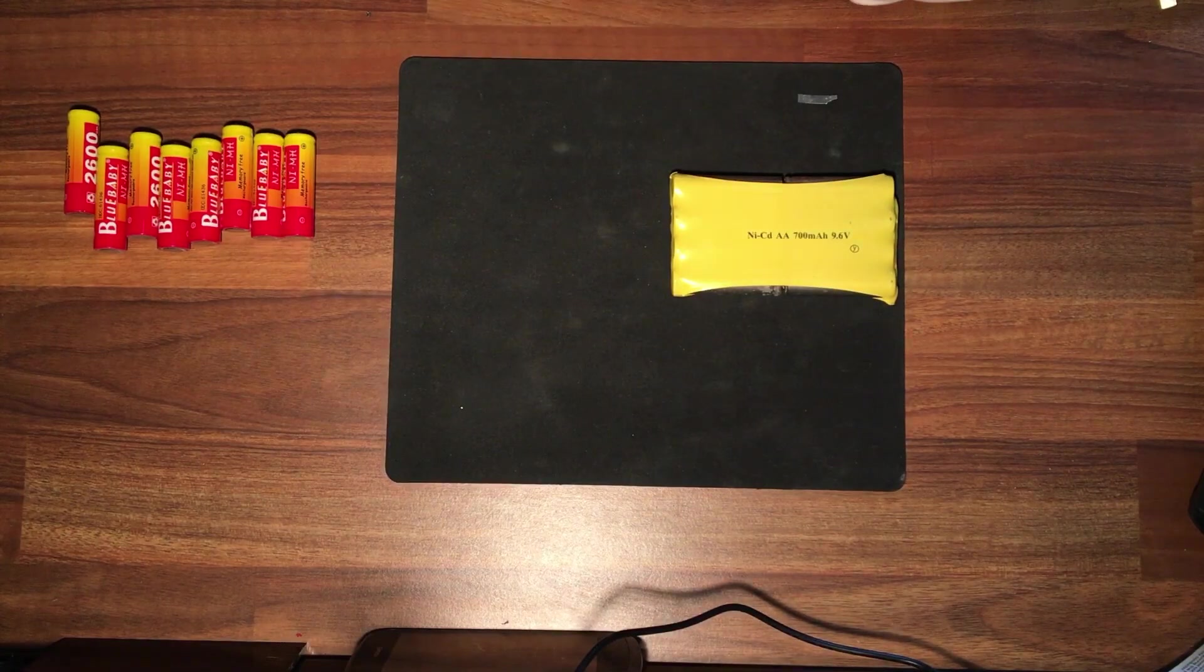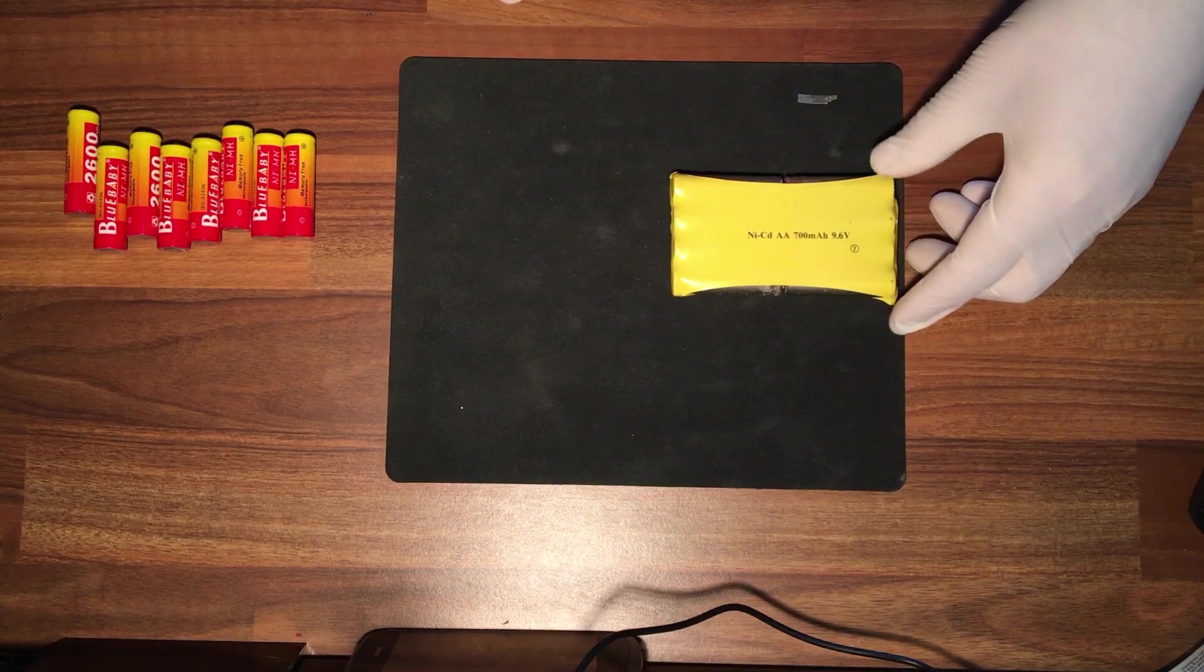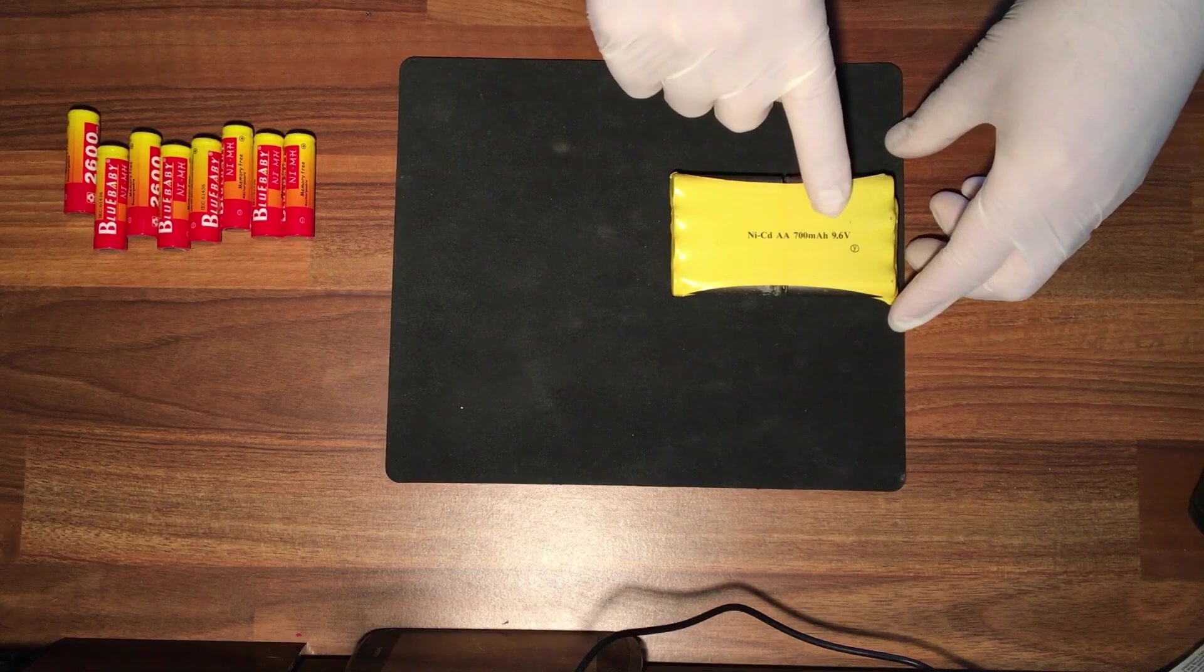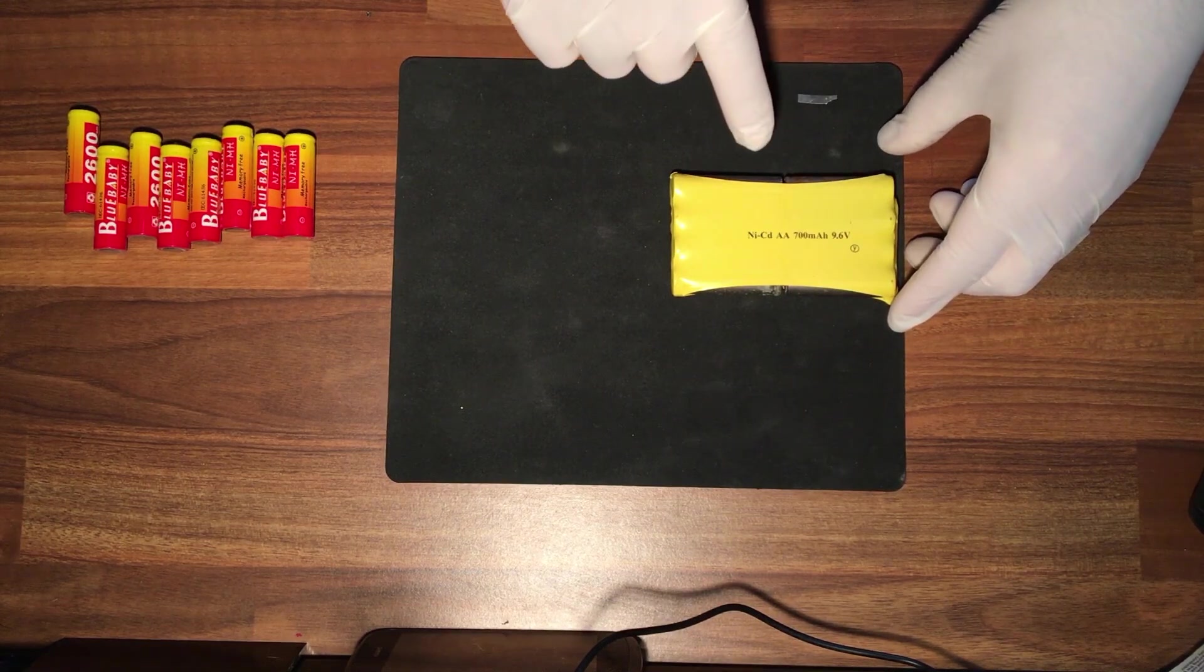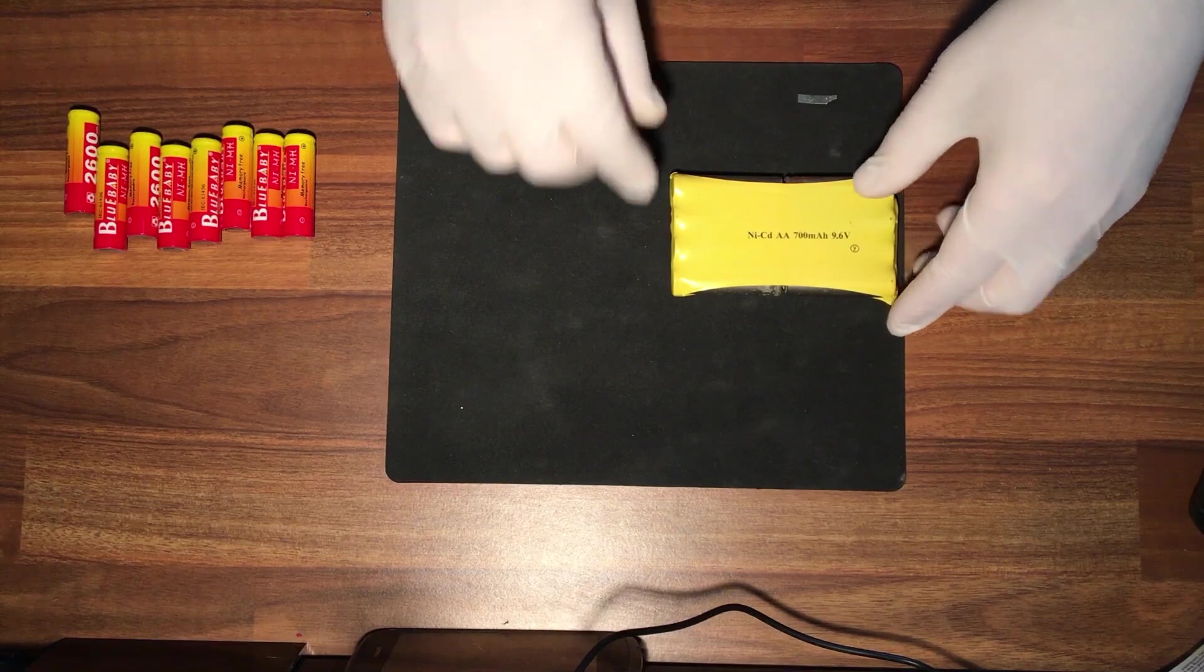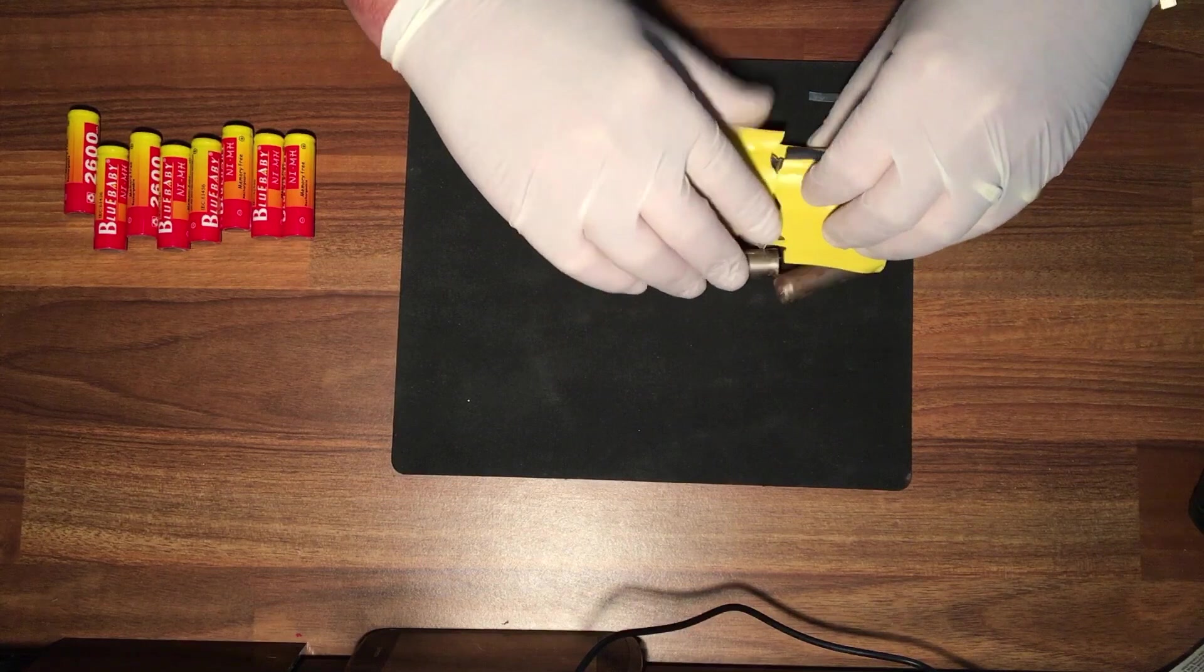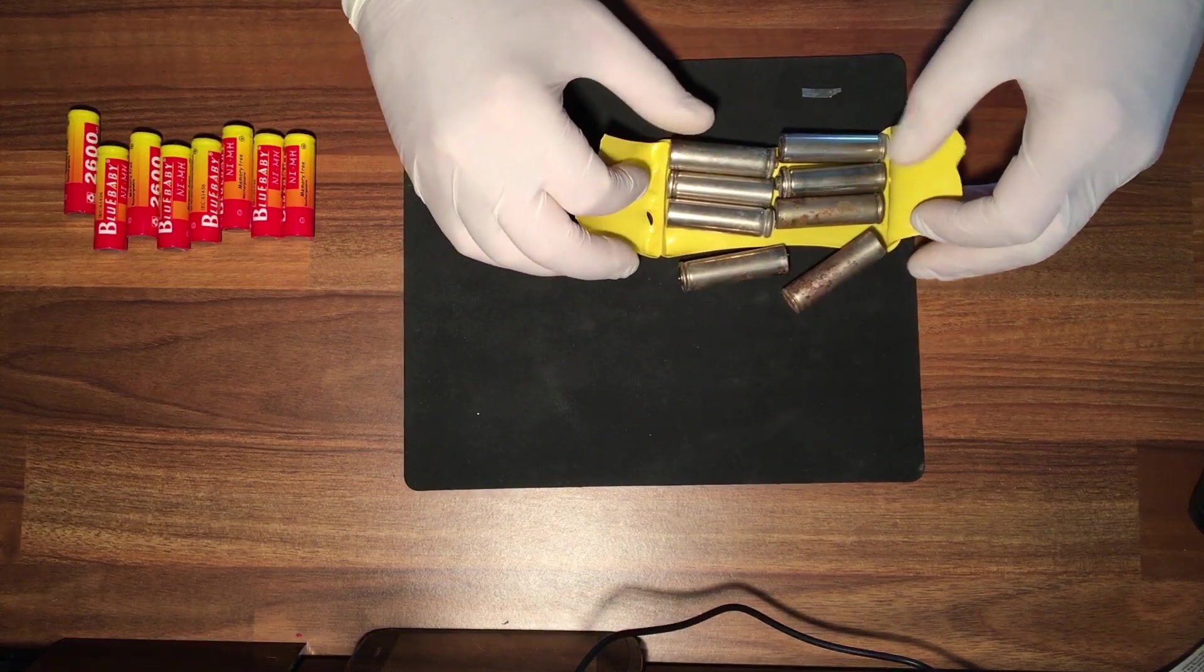Right, this is the battery pack here as you can see. I've already opened it up. It's 700 milliamp, 9.6 volts, which means that there's eight 1.2 volt batteries joined in series, plus to minus, plus to minus, and so on. You can see the batteries there, they're in pretty poor state.